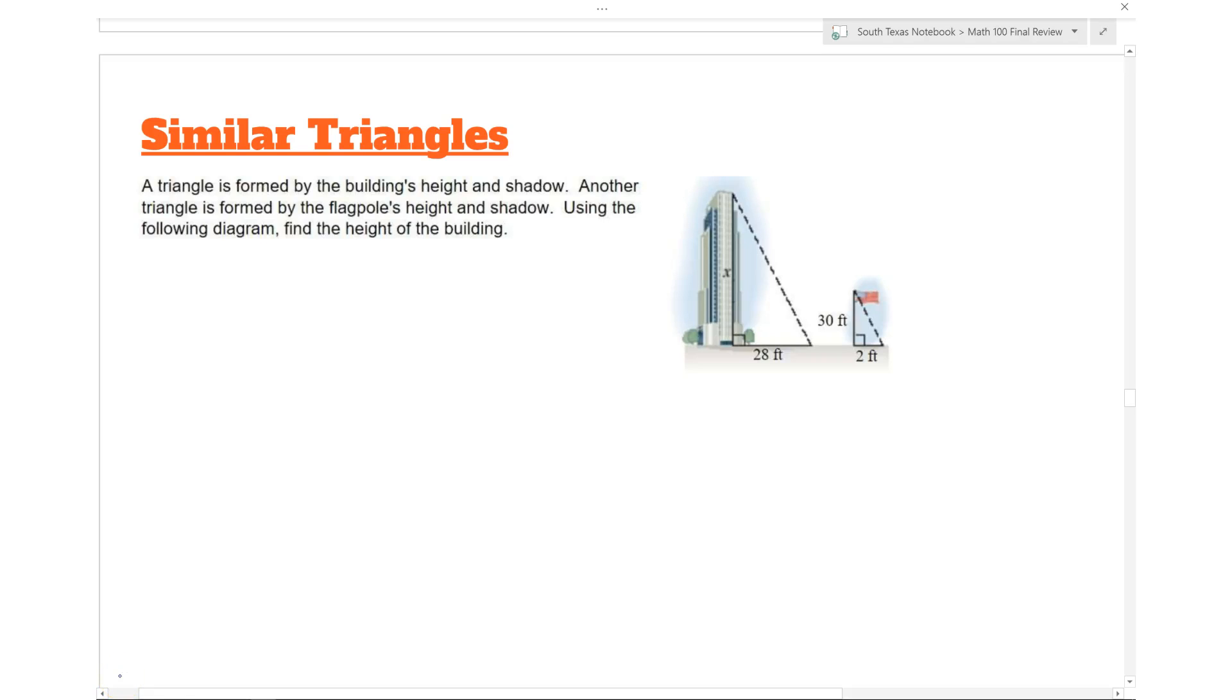The topic is called Similar Triangles. We have a triangle formed by the building's height and shadow. This is the height and this is the shadow. Another triangle is formed by the flagpole's height and shadow. This is the height of the flagpole and this is the shadow.